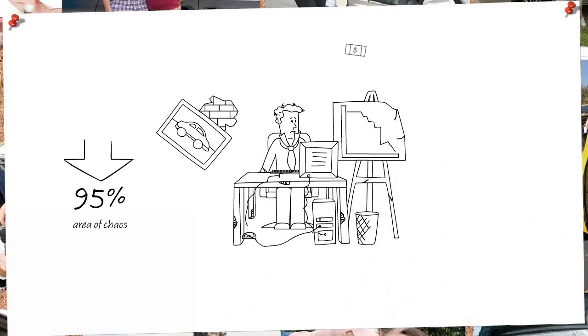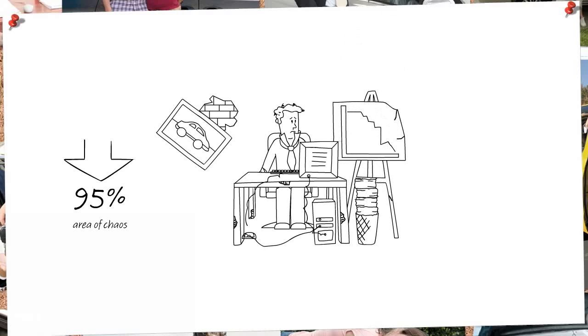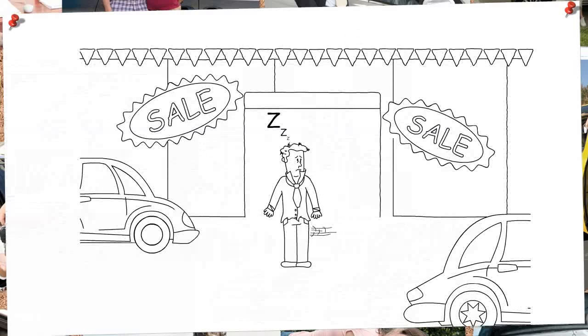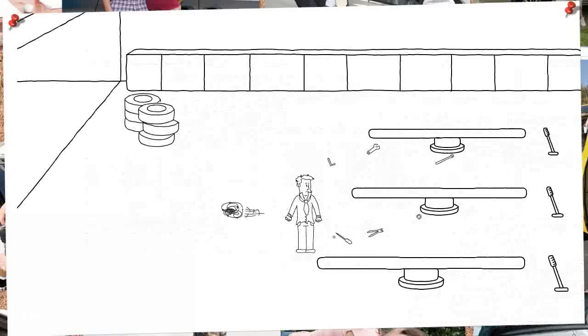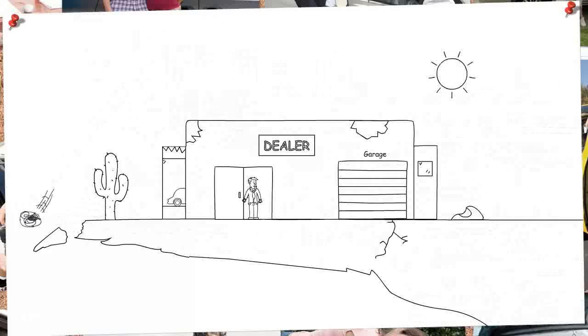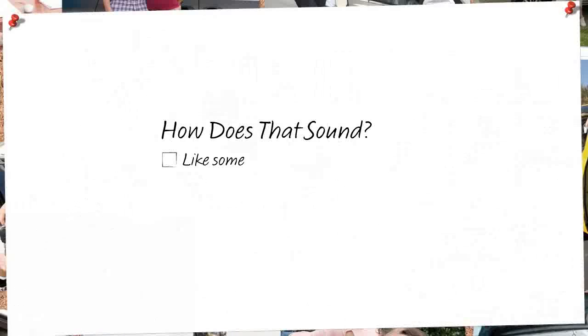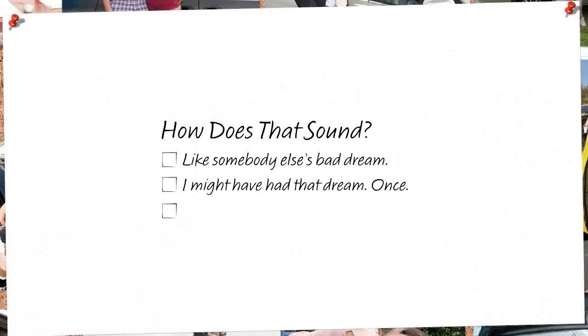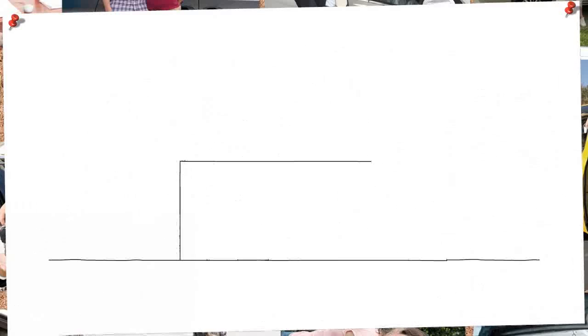Which means you're leaving easy repeat business money on the table, as much as 1 million dollars. You're missing opportunities for growth, you risk losing market share, profits, everything you've worked for. How does that sound? The strong dealer, on the other hand, is found here in the area of order.